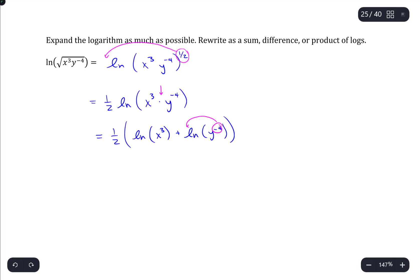Now each of these are exponents on the arguments of logarithms, so those can come out as constant multipliers. So one-half times three natural log of x minus four natural log of y.